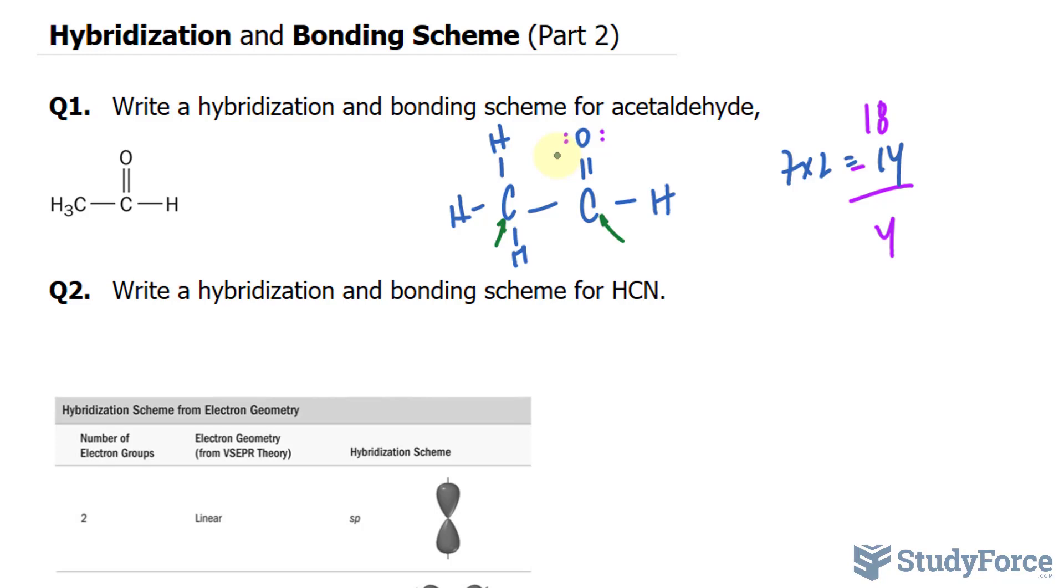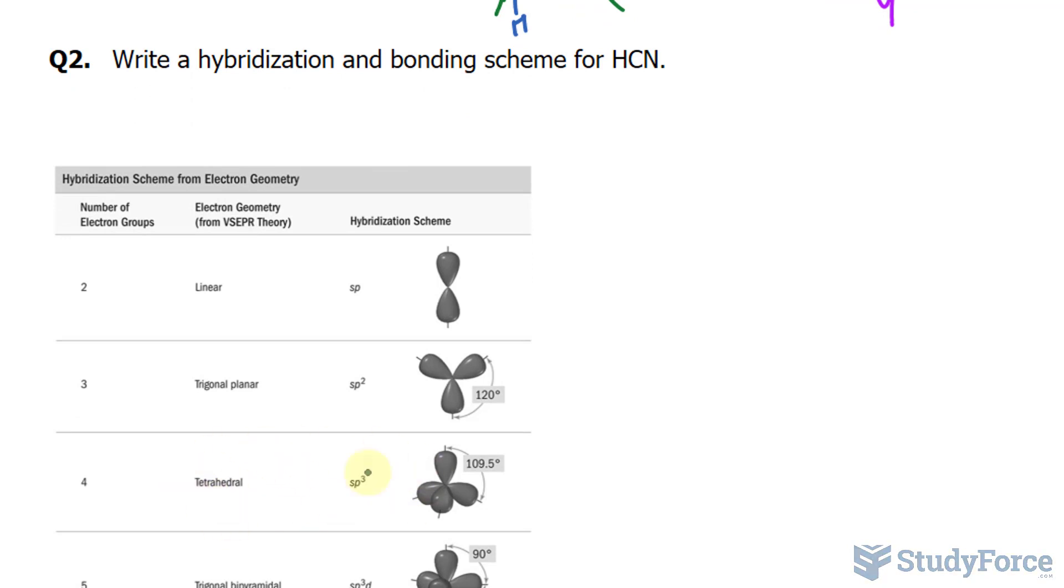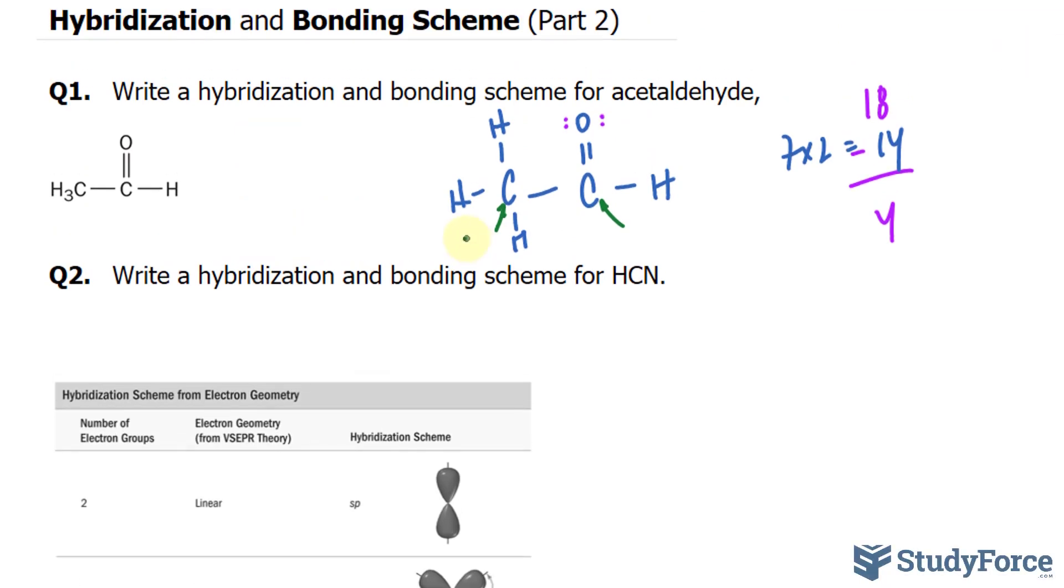If you have four single bonds and no lone pairs, that's a total number of four electron groups, four plus zero. This means we have a tetrahedral and the hybridization scheme for that carbon is sp3. So I'll write that down.